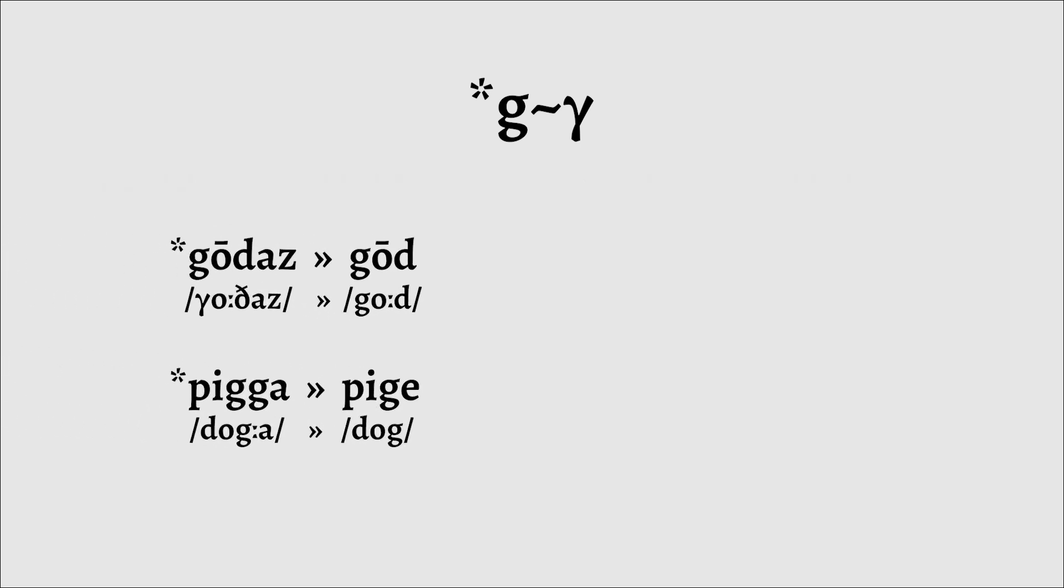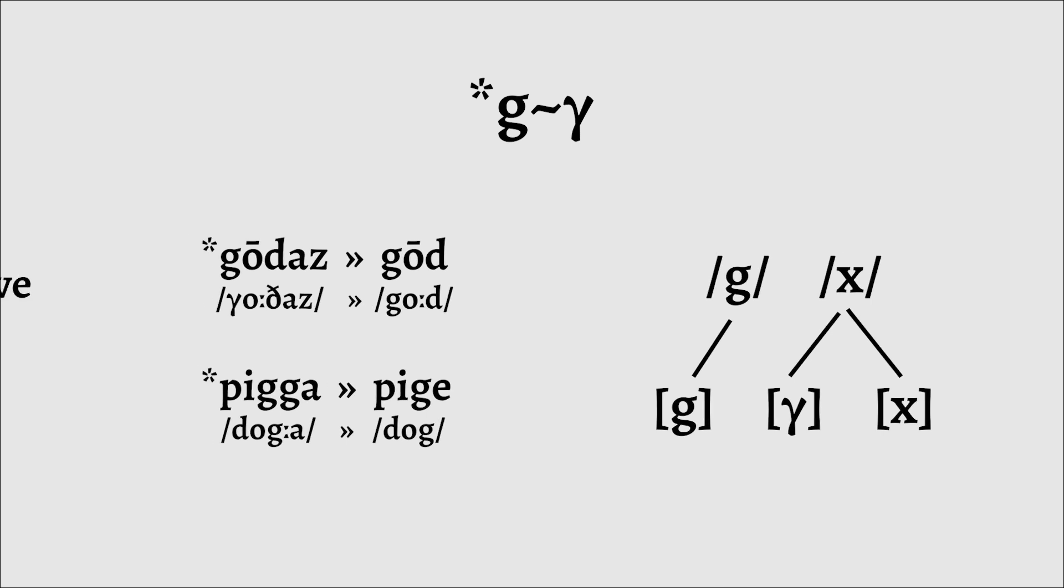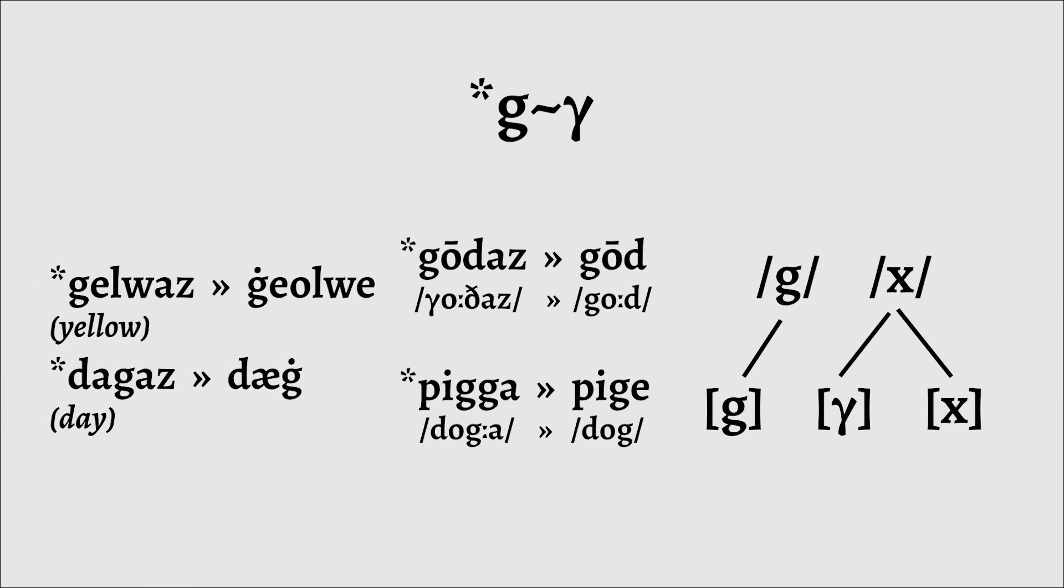As Old English developed, G would finally become a stop in initial positions and geminates would shorten, causing all old cases of G to become allophones of CH. G would also devoice word finally. To recap, G becomes Y when before or after a front vowel, G word initially before other vowels, then G separates from G to become an allophone of CH. Make sense?